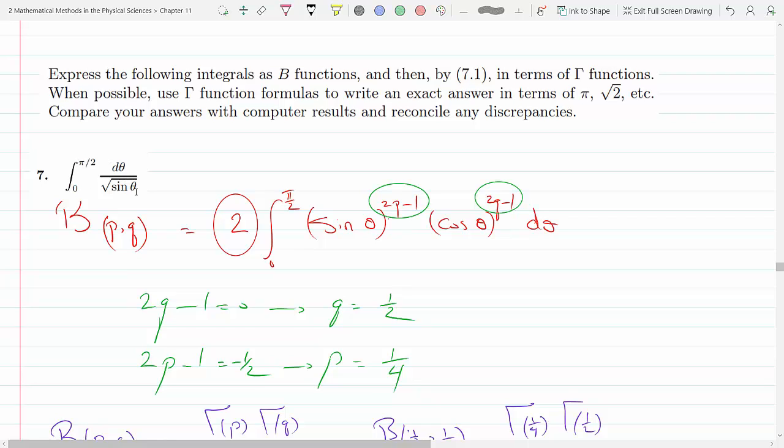The integral is from 0 to π/2, dθ over square root of sine θ. What I could do is use a formula in the book, which is equation 6.4, and I'm trying to rewrite the original question as this formula.